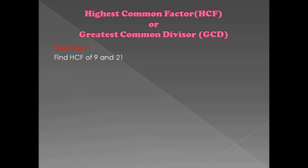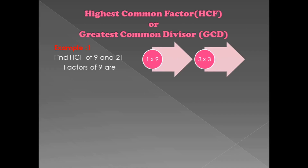Factors of 9 are the numbers by which we can divide 9. So: 1 × 9 = 9, and 3 × 3 = 9. Since 9 × 1 is a repeat, we don't need to write it again. Therefore, the factors of 9 are 1, 3, and 9. This is the first step — find the factors of 9.